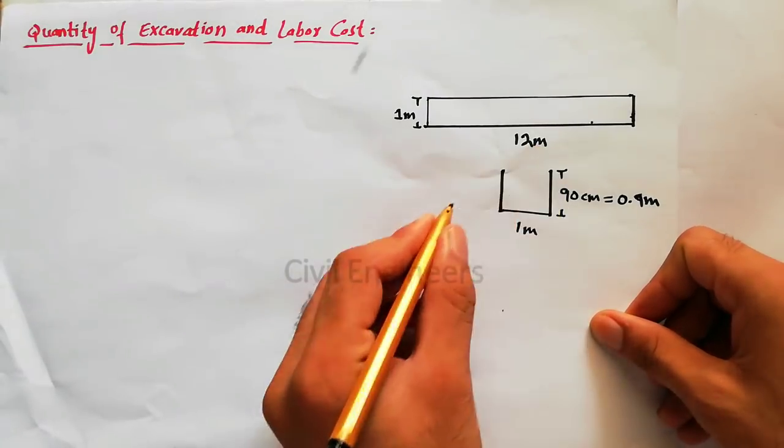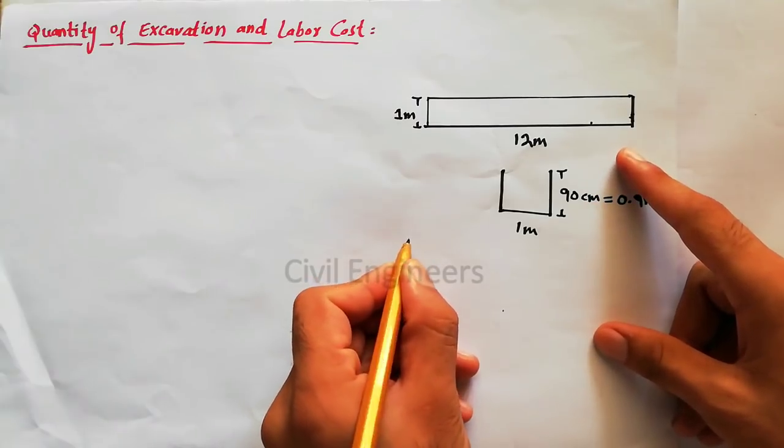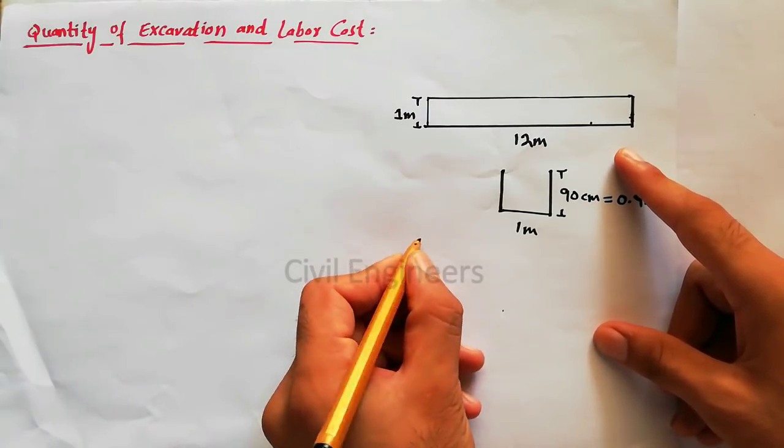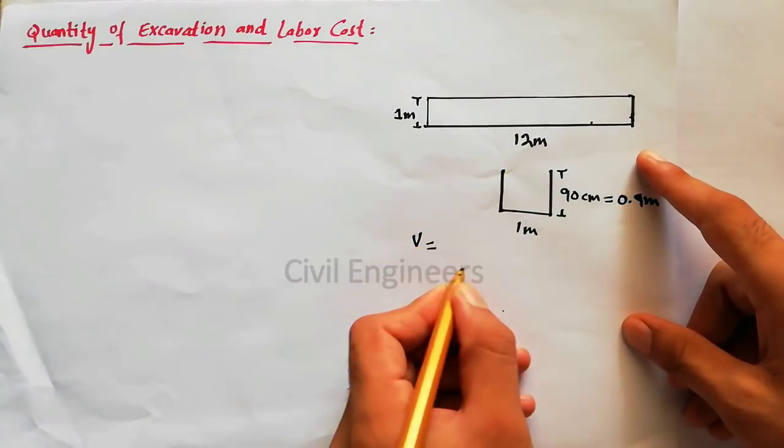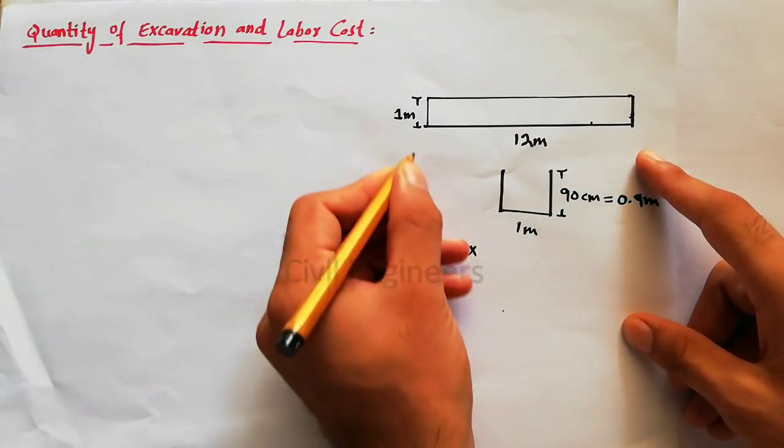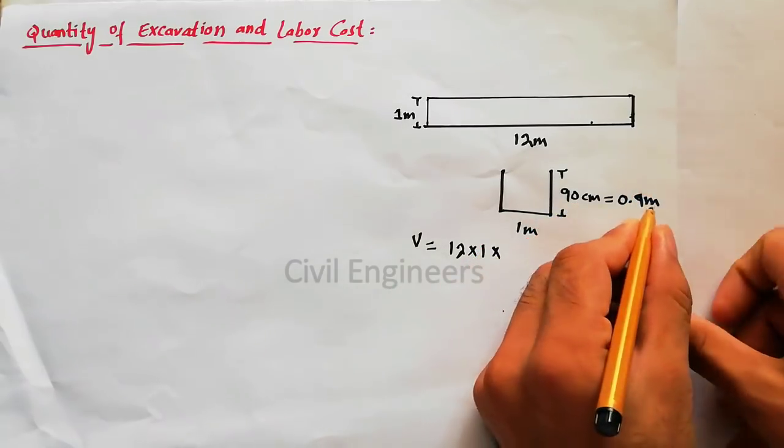So first of all, I have to find the volume of this foundation for excavation. So volume equals 12 meters multiplied by 1 meter width, and the depth is 0.9 meters.